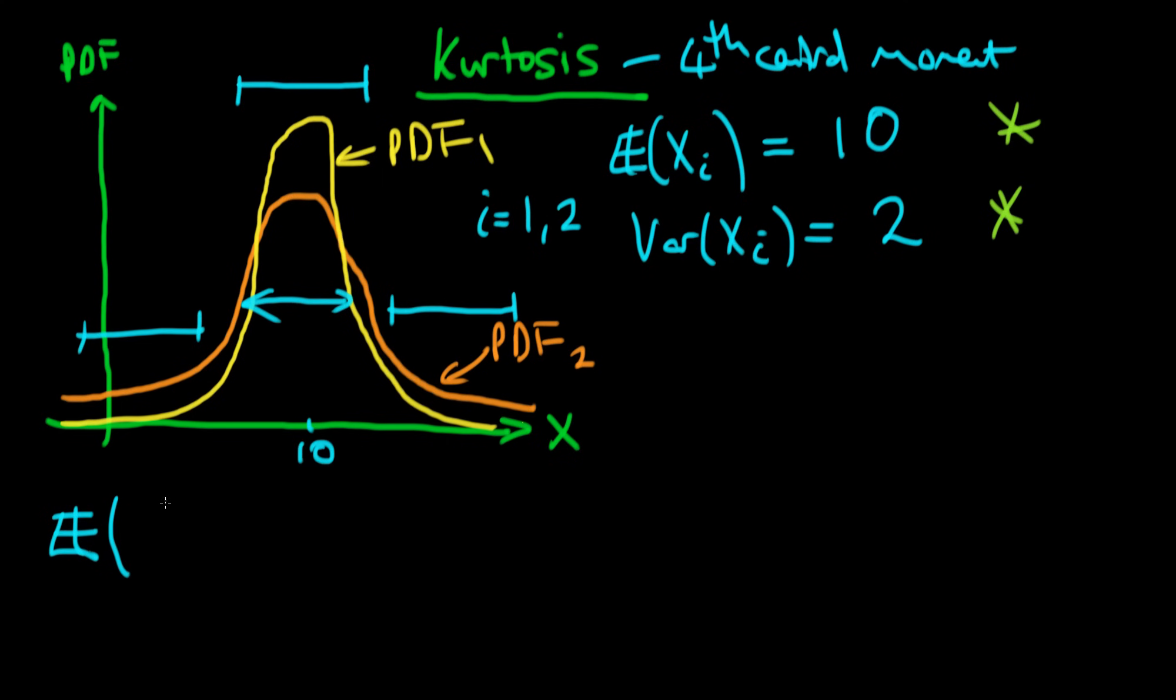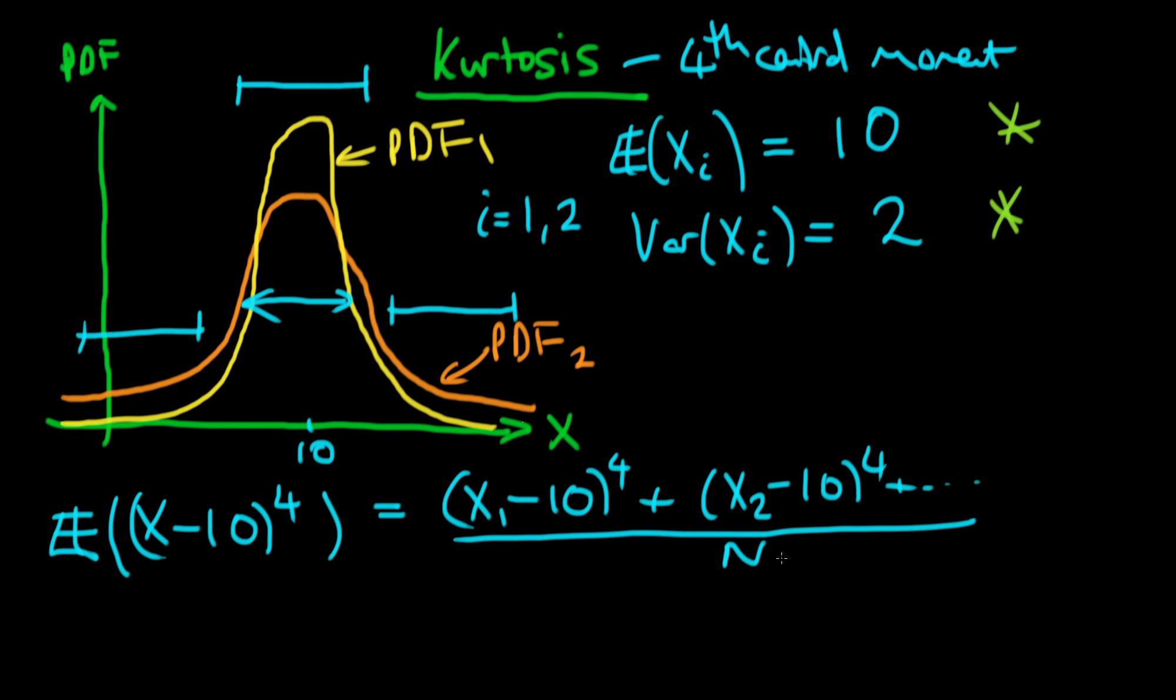So the fourth central moment, or the kurtosis, is referred to as the expectation of X minus the mean, which is ten, to the power of four. And just reminding ourselves of what this exactly means, it means that if we were to take the process infinitely many times, and for each sort of realization of X we then take 10 off and then we raise that to the power of four, and then we do that for the second X, so X2 minus 10 to the power of four, and we just sort of continue that process forever and then sort of take the average of all those processes, then that's what it actually means to have the fourth central moment.